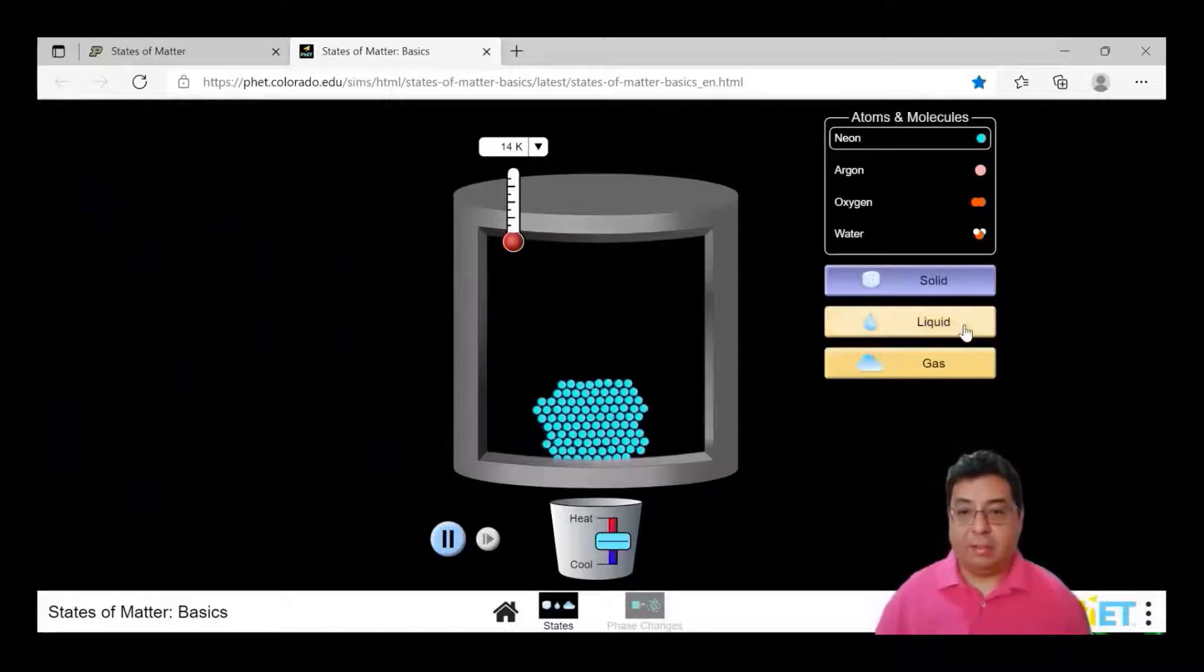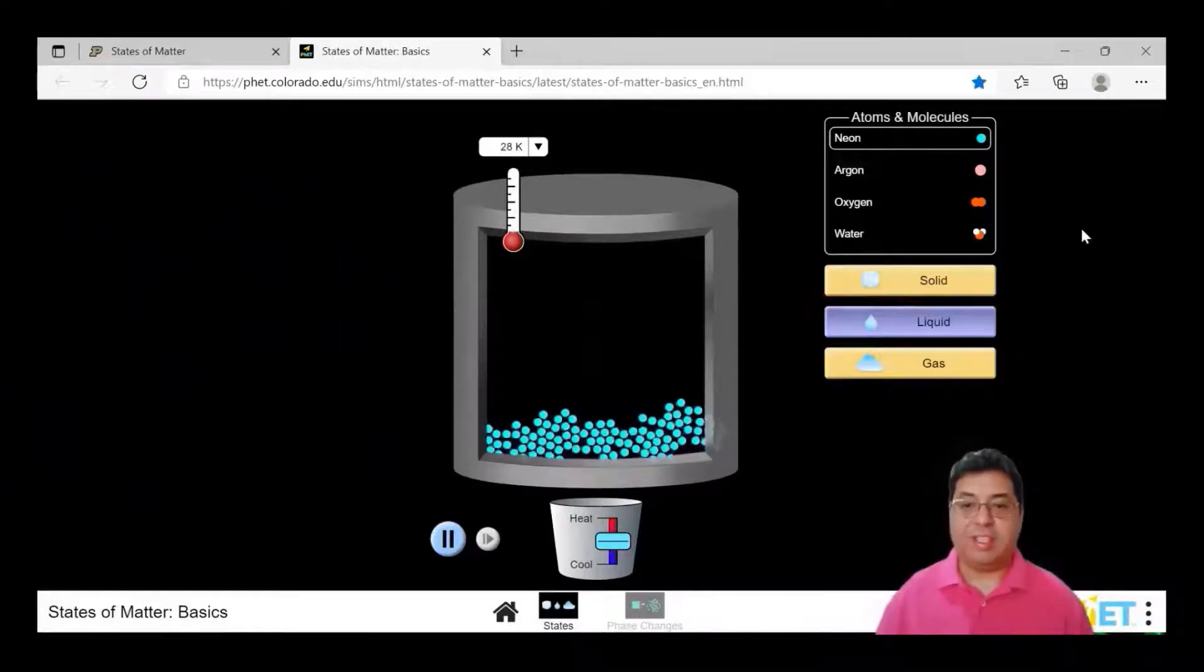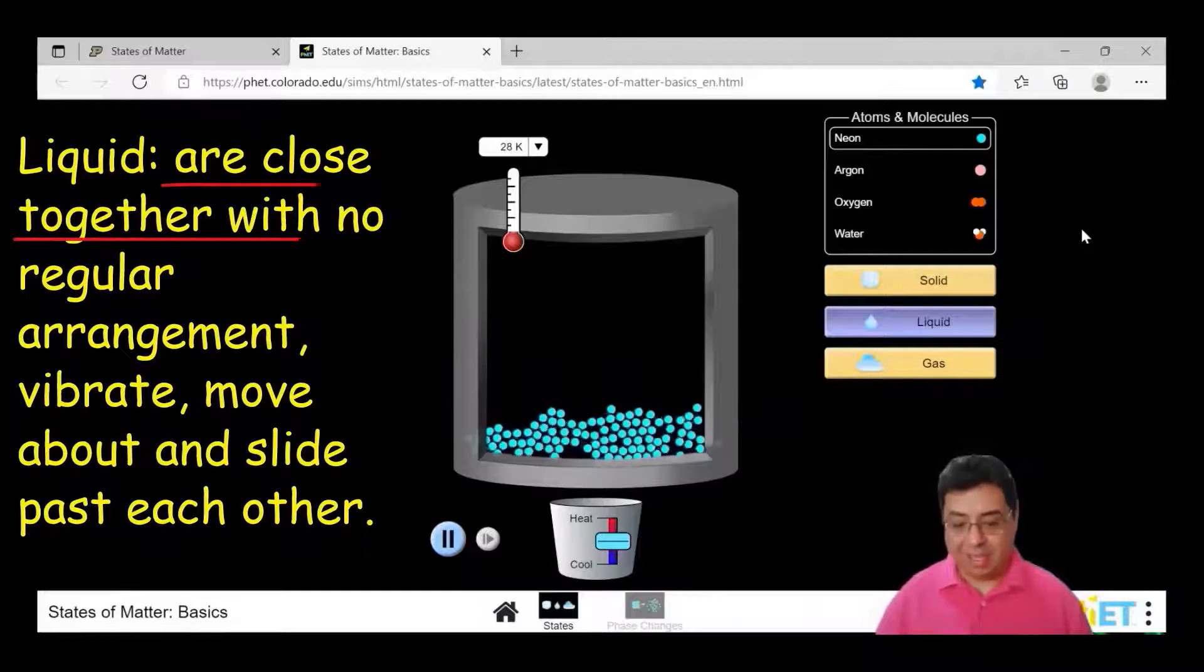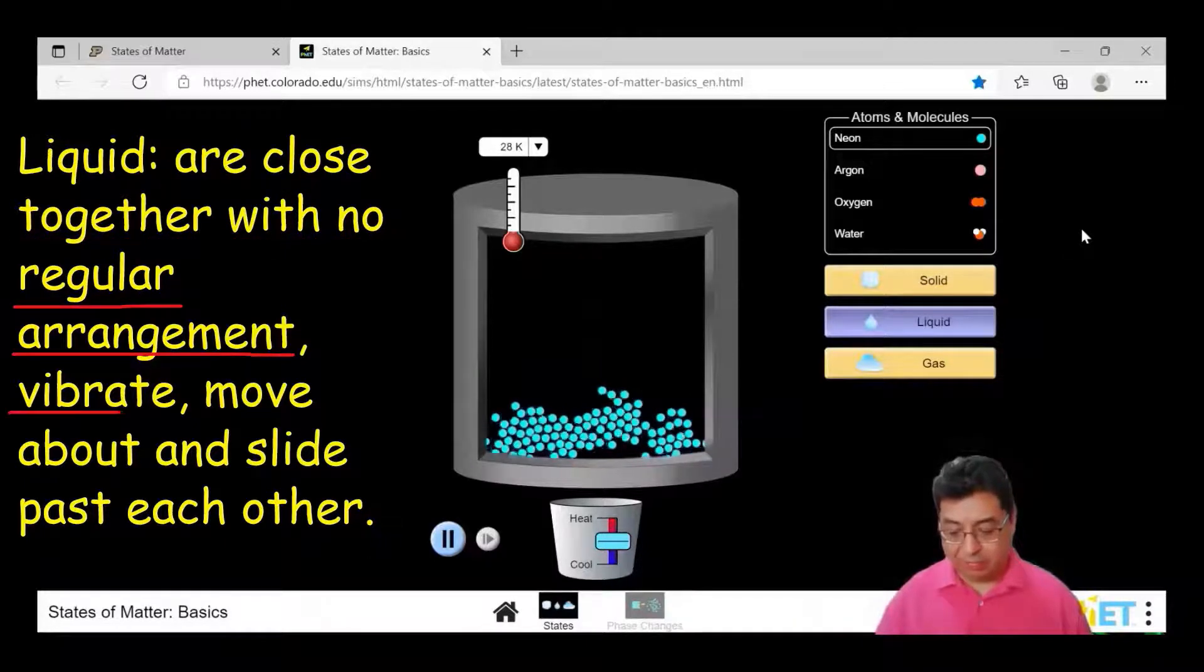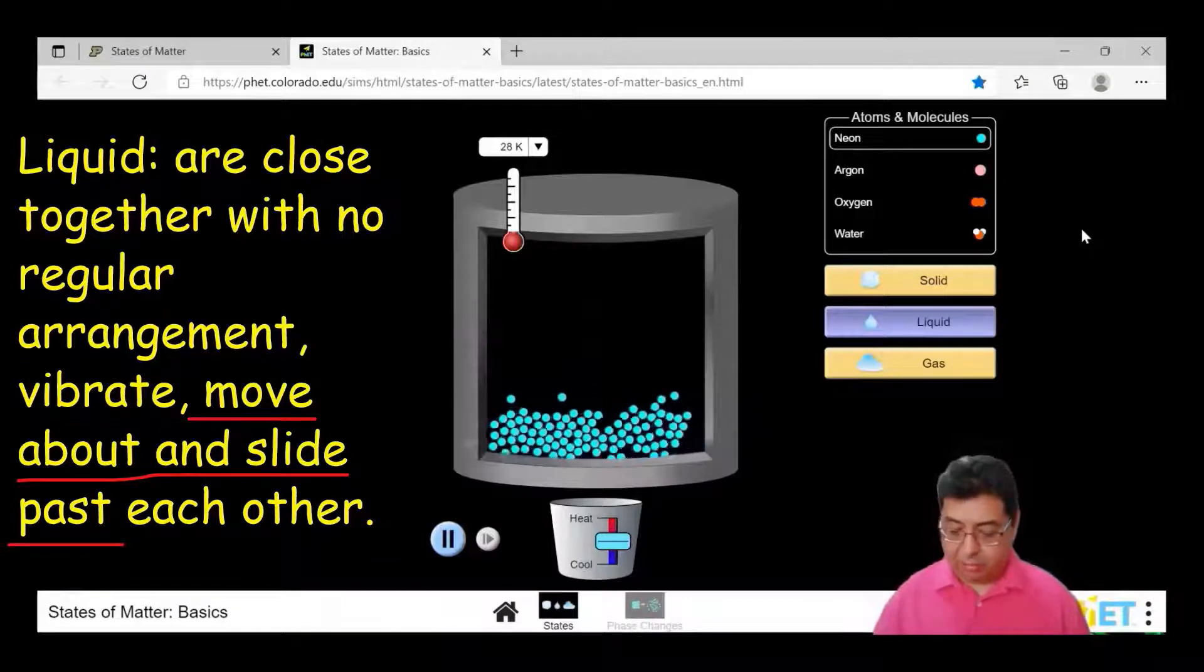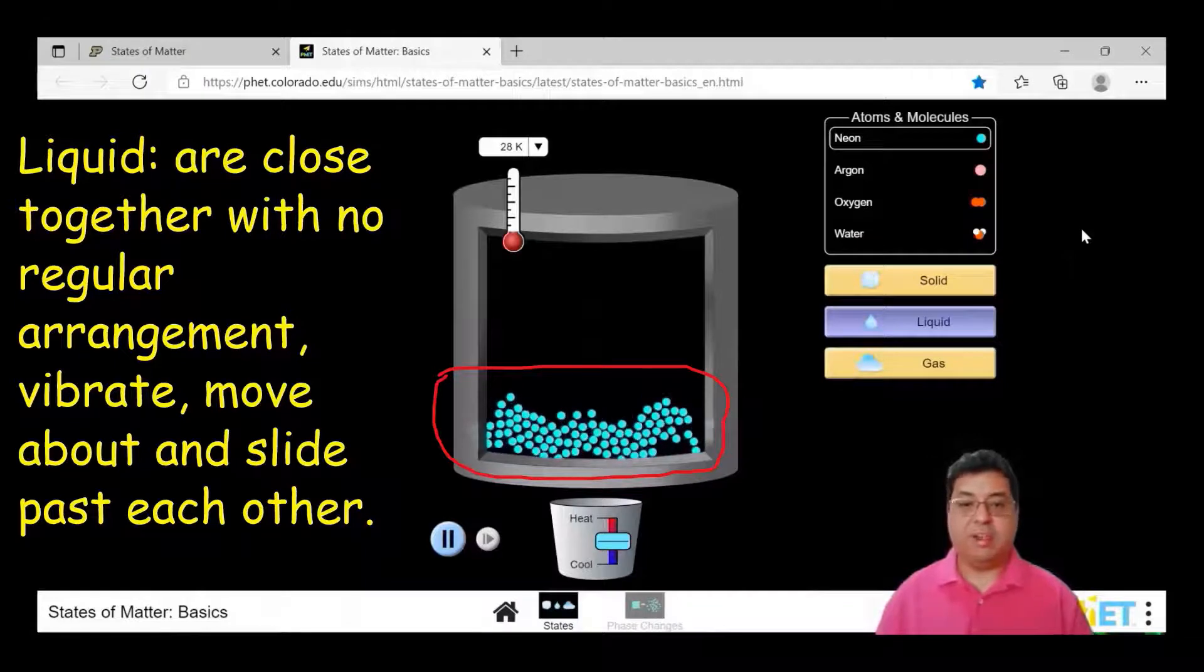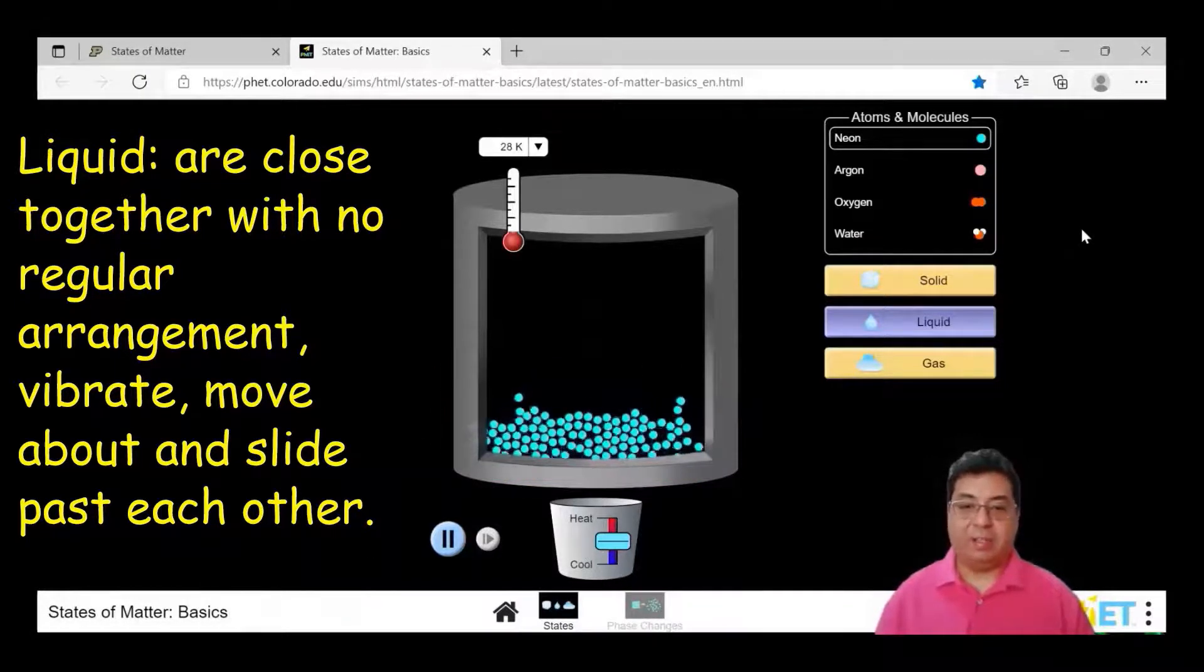Now I'm just going to click on this part here and now we're on the liquid. You can see it's changed and you can see there's more activity. As the definitions I said earlier says, liquids are close together with no regular arrangement. They also vibrate. They move about and they slide past each other. You can see there is movement and they are just kind of sliding around past each other here. They're just more loosely free.